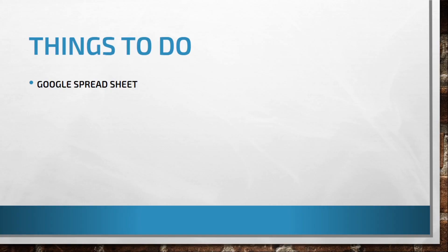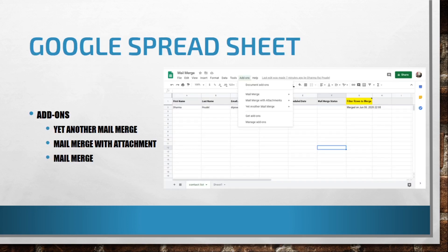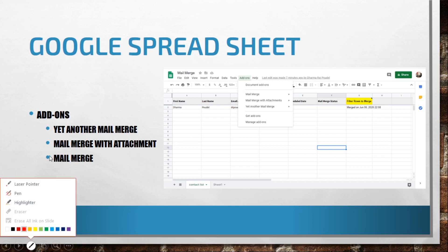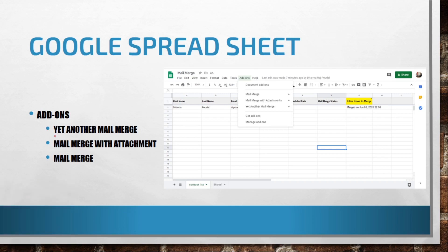To send a mail merge from Gmail we just need a Google Spreadsheet. In a Google Spreadsheet we just have to add add-ons — that will be Yet Another Mail Merge, or mail merge with attachment, or mail merge. You can add any add-ons as per your requirements. Today I am going to show you from Yet Another Mail Merge how to add these add-ins.